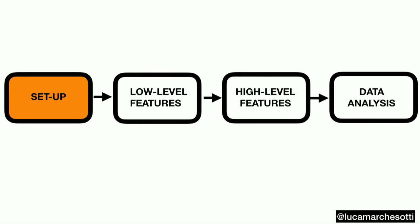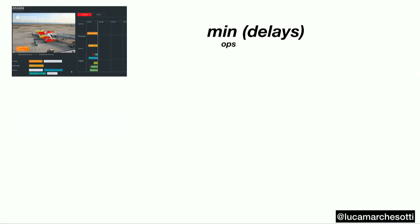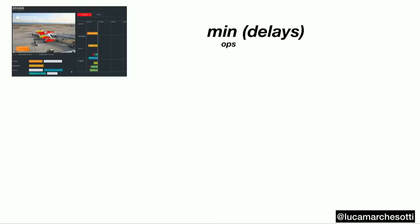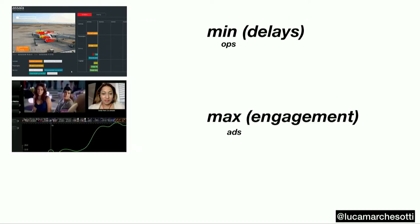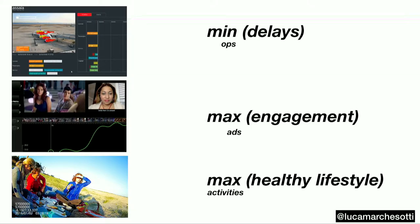So how do you set up your computer vision pipeline to start your project? First, as many of you are aware, when doing a data science project you focus on the business objective of your client. For an airport, it's all about delays — you want to minimize delay by understanding what's going on in the video, identifying operations that are most time-consuming and creating the most problems. The second example is about engagement — maximizing consumer engagement by looking at the most engaging ads. And for lifestyle, we look at activities.